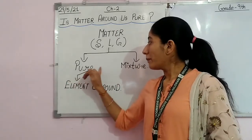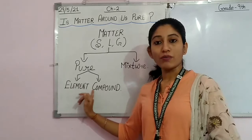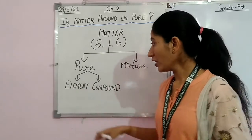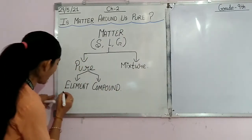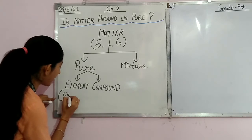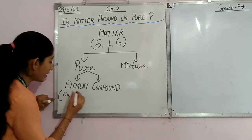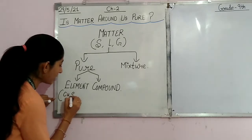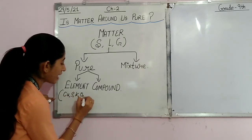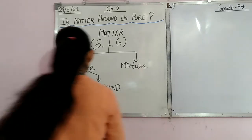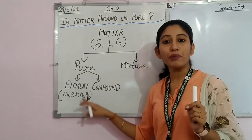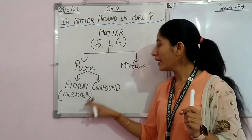Pure matter exists in the form of elements. For example, copper is an element. Sodium is an element, potassium is an element. Oxygen is an element, hydrogen is an element. These are elements which constitute a particular type of matter.